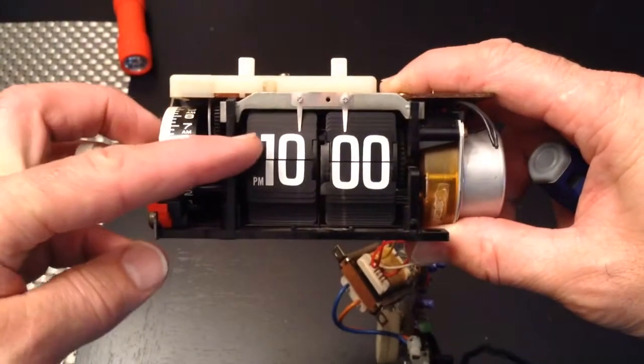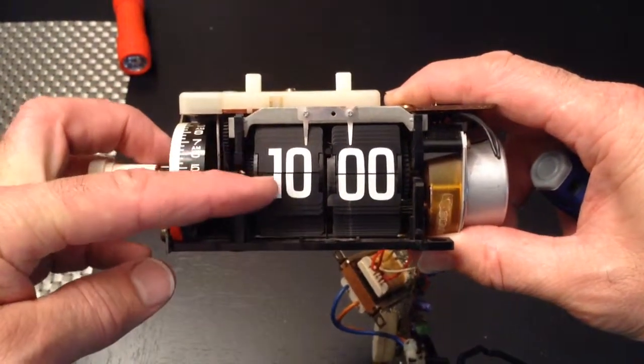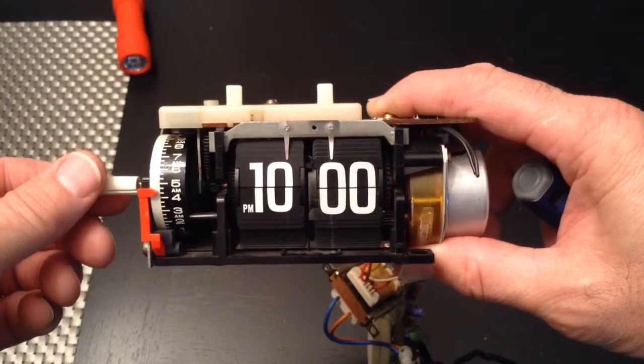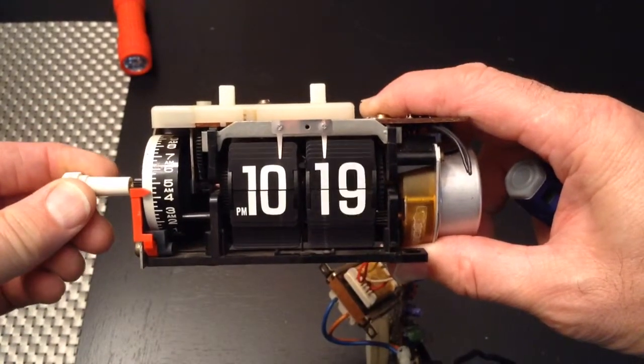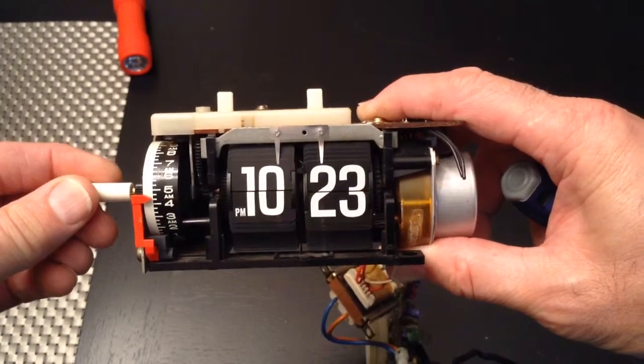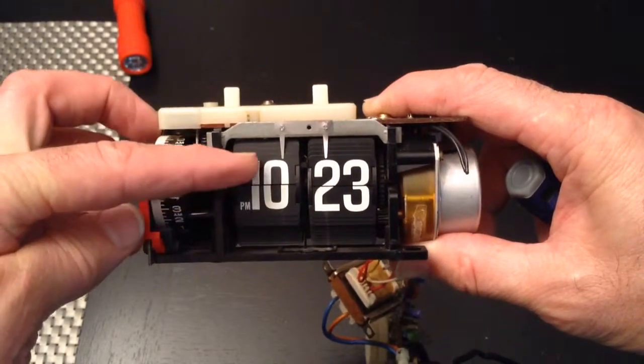And they also noticed there were two tiles for each hour and that's normal for these Copal flip clocks. So as you watch, when you get to about 20 or 23, there, it flipped here, but it's still 10.